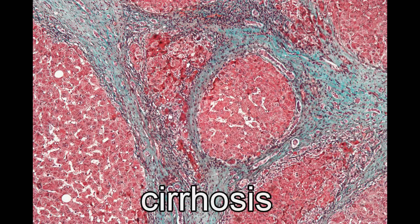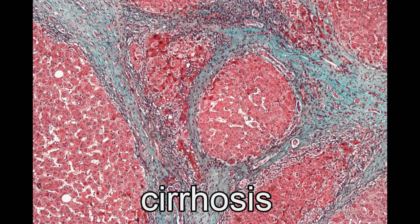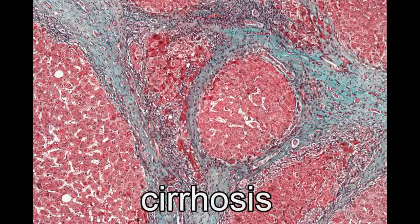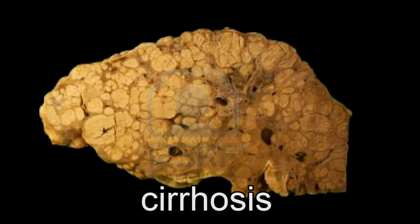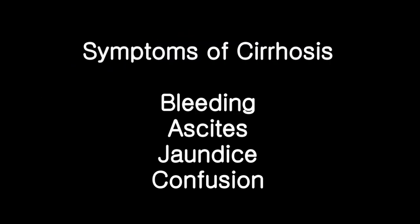Although most patients with fatty liver have little or no problem, up to 25% of patients may go on to develop chronic scarring of the liver as a result of chronic inflammation in the liver. This may lead to a complication known as cirrhosis, where most of the liver cells are replaced by scar tissue. In cirrhosis, the liver is unable to function properly due to insufficient number of functioning liver cells. Patients with cirrhosis often develop problems such as bleeding, fluid in the abdomen called ascites, yellowing of the skin called jaundice, and even confusion and altered level of consciousness.